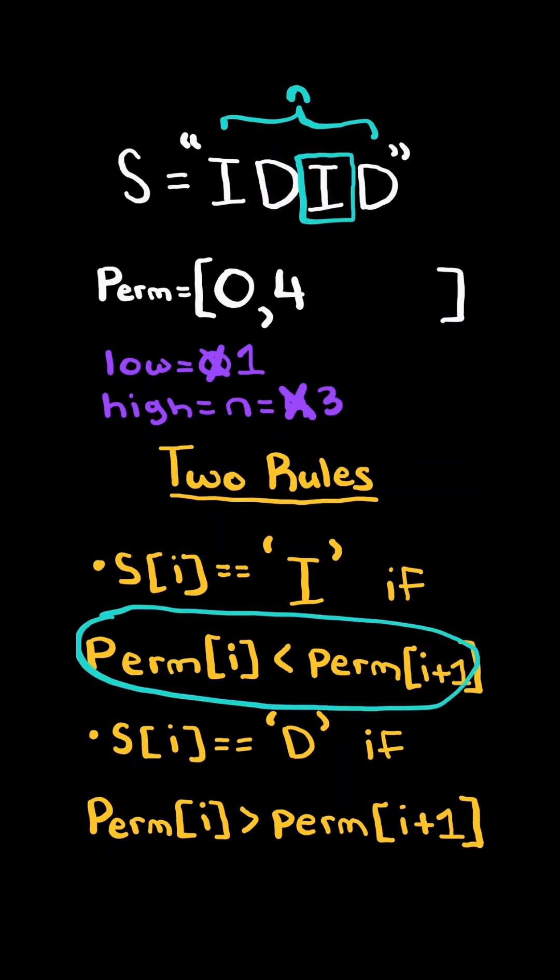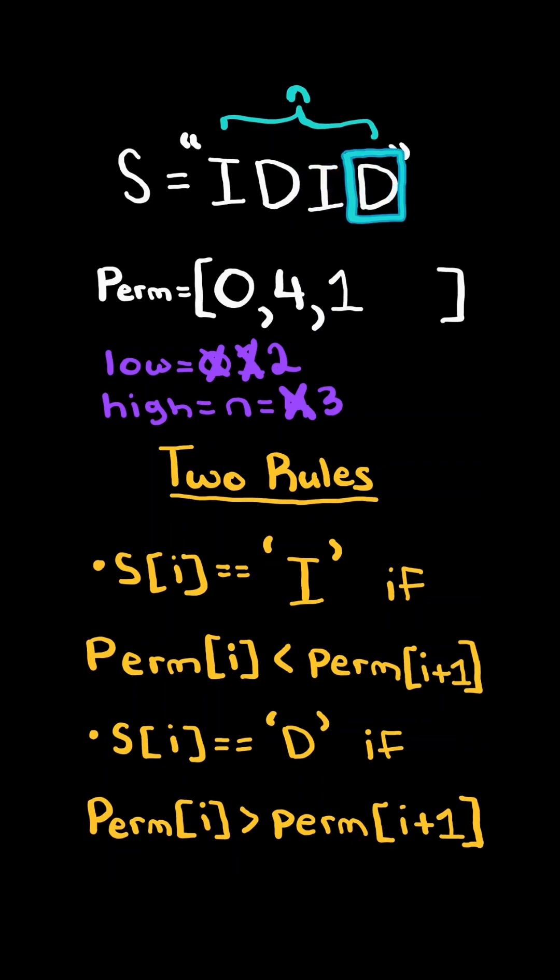Once more, the character is an I, so we append the lowest and increment low, continuing to the next character. The character is a D, so we append the highest and then decrement high.